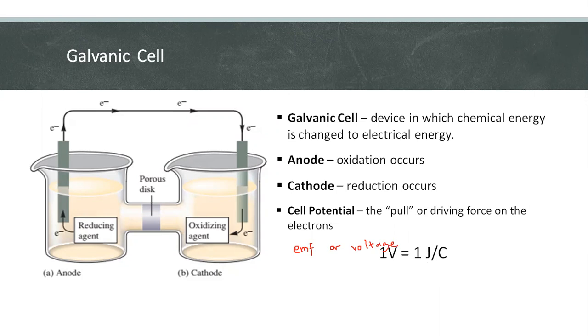The instrument used to measure cell potential is a voltmeter, which works by drawing current through a known resistance.